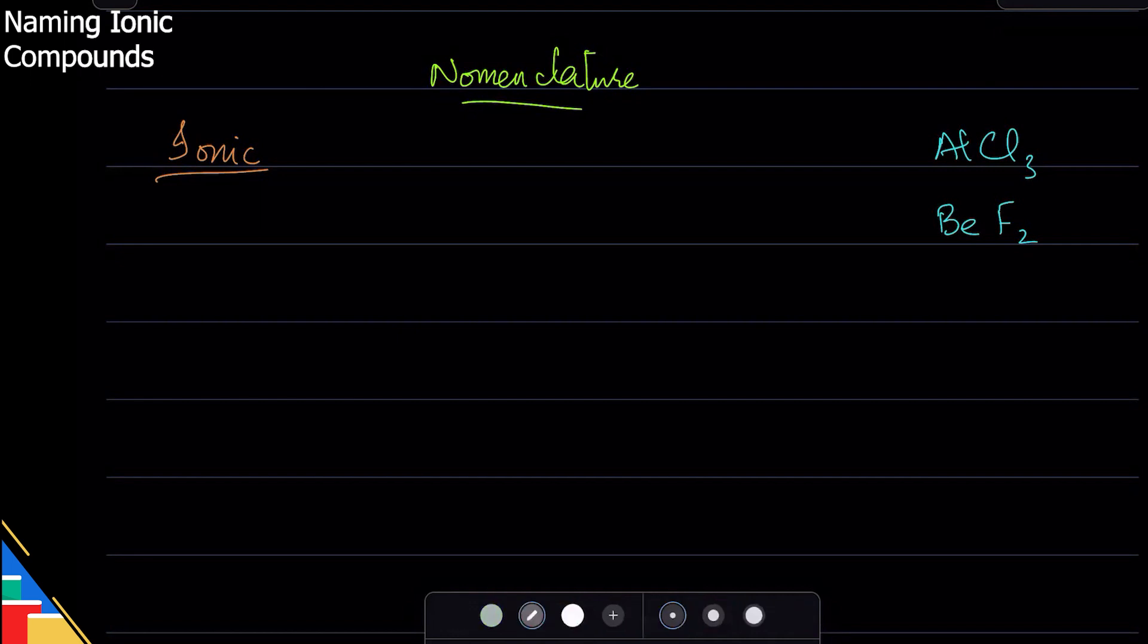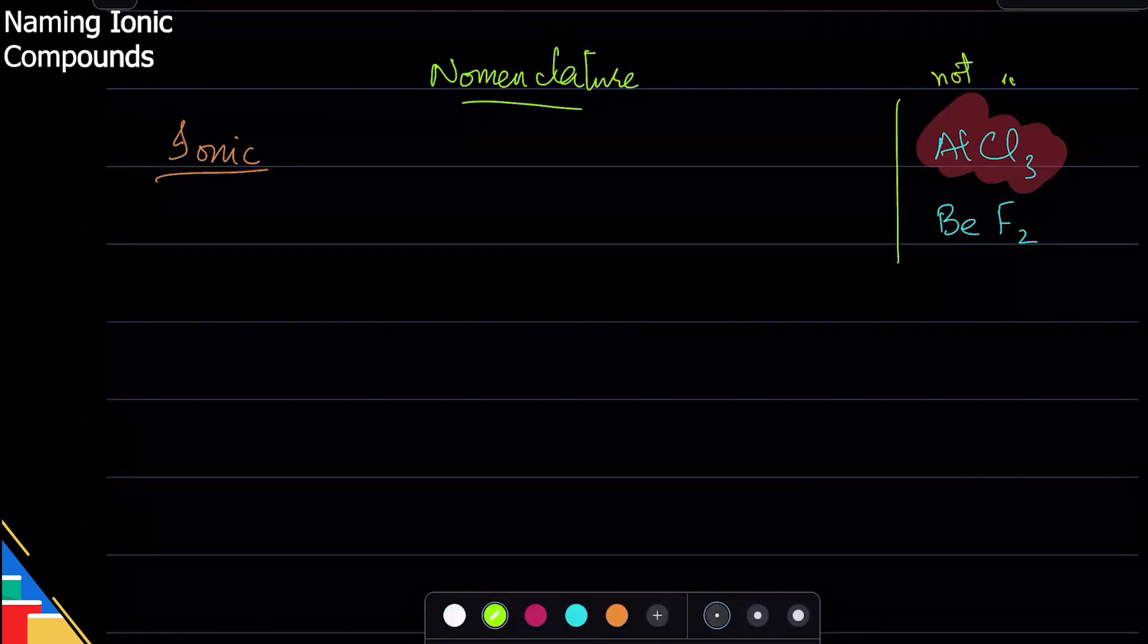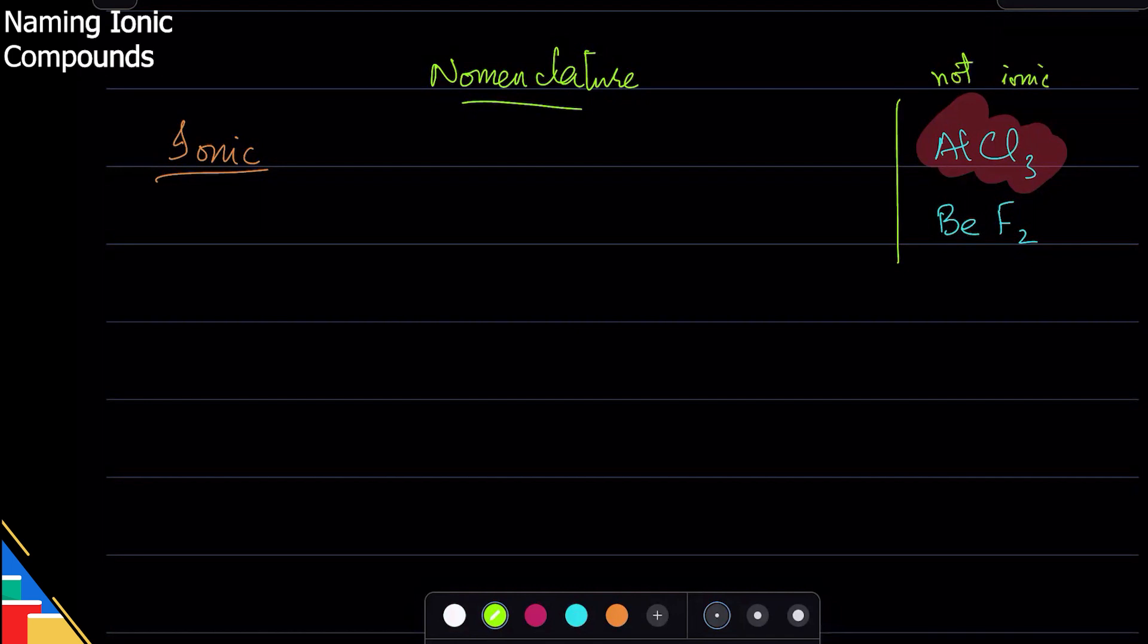This one you should know in case the examiner ever asks about it, so you should know that this thing AlCl3 is not ionic, not ionic, okay.